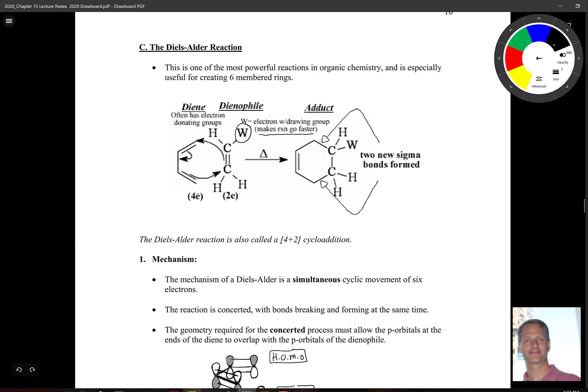Electron flow follows what I've written here. We're coming over and making a bond to this carbon. This is swinging over to this position. And then we're making a bond to that carbon there. So when we're done here, what we're looking at is a double bond that's moved position. And then also two new sigma bonds being formed.